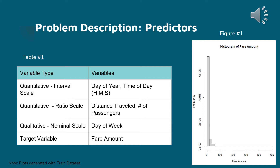For our qualitative data, we have day of the week. As you can see in Figure 1, that's a histogram showing the fare price, in which we are mostly under $25, with the exception of a few outliers.